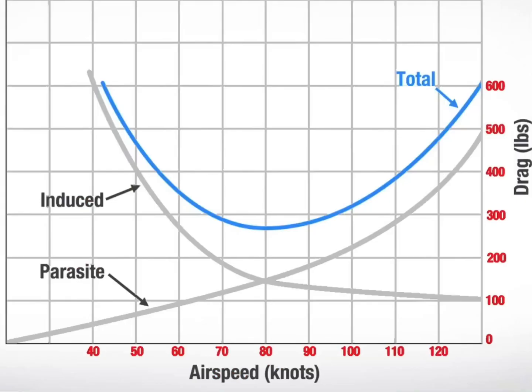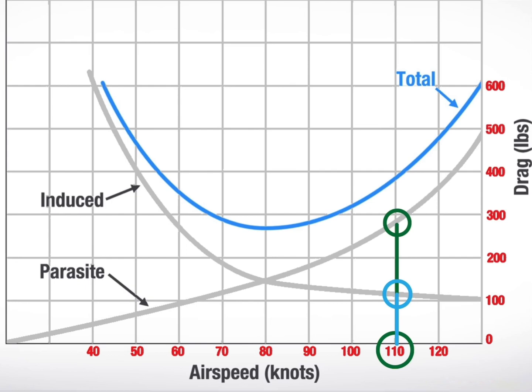It's worth noting the relationship between induced drag and parasite drag. The higher the aircraft speed, the more parasite drag it will produce, but the less induced drag it will have. This has to do with the fact that at higher speeds the aircraft will need a lower angle of attack to develop lift, and lower angles of attack result in less pressure differentials above and below the wing, fewer vortices, and therefore less induced drag.